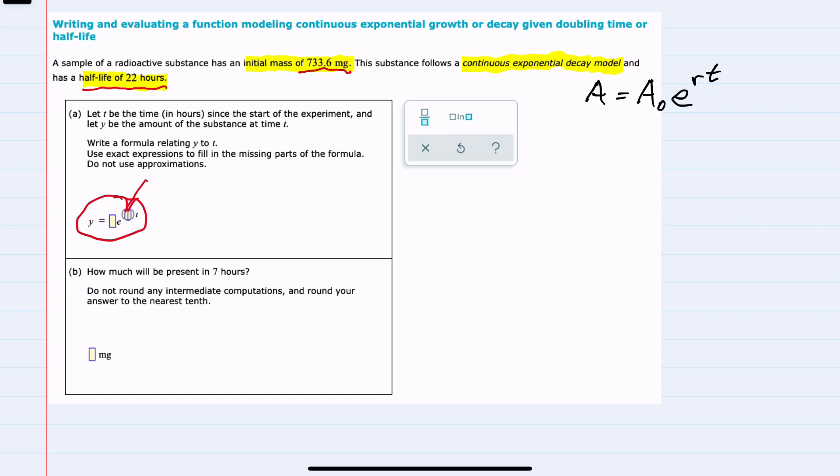Substituting into our formula, the half-life means that the final amount a will be one-half of what we started with, a sub-zero. On the right-hand side, we also have a sub-zero, e to the r, which we don't know, but times t, which is 22.